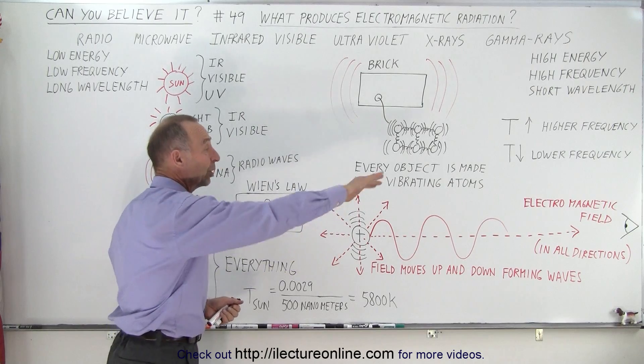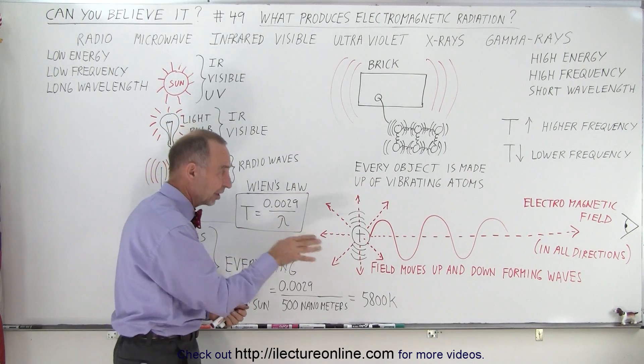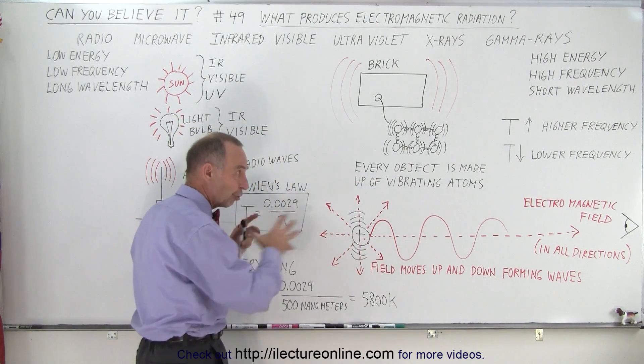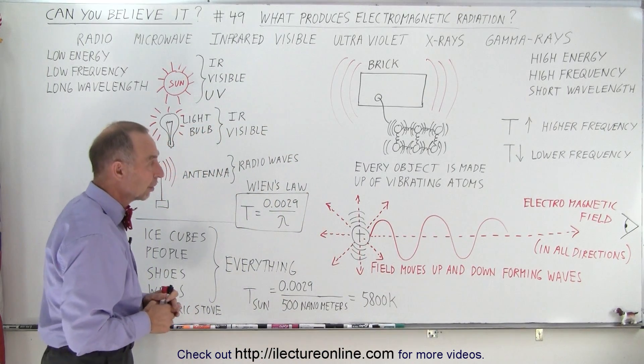It has electric field oscillations in one direction, and the magnetic field oscillations in the other direction. Together, they form electromagnetic radiation.